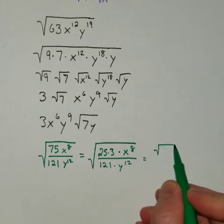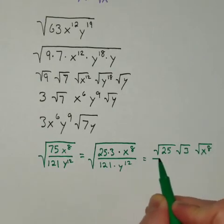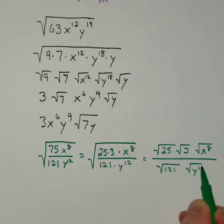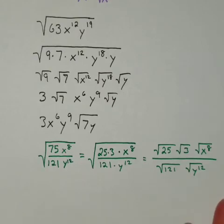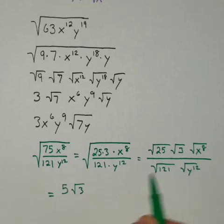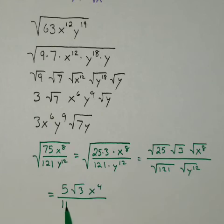So I'm going to split this up. Root 25, root 3, root x to the 8th, all over root 121, and root of y to the 12th. And here I'm just going to be evaluating each root as they can be. So, square root of 25 is 5. Root 3 doesn't simplify. And root of x to the 8th is x to the 4th. Here, root of 121 is 11. Root of y to the 12th ends up being y to the 6th. You want to cut that power in half.